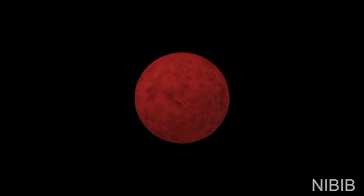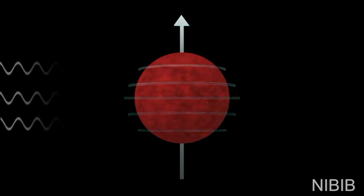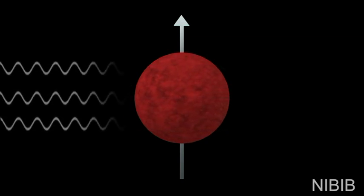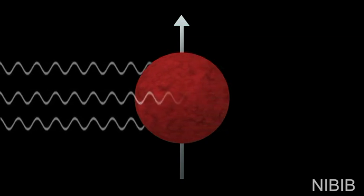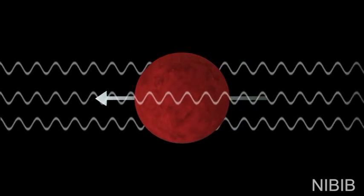MRIs use protons, which are abundant in the human body. All protons spin, creating a small magnetic charge. When a strong magnetic field is introduced, as is the case in an MRI machine, the protons align with that field.